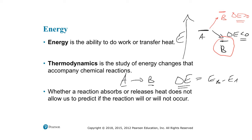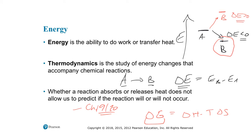Whether a reaction absorbs or releases heat does not allow us to predict necessarily if the reaction will or will not occur. If you want to discuss whether or not the reaction occurs spontaneously, that comes up in Chapter 19 or 20, which discusses the spontaneity of reactions — you might have learned about delta G and its relationship with delta H minus T delta S. If delta G is negative, the reaction can be spontaneous; if it's positive, the reaction won't occur spontaneously. But that's not a discussion for this chapter. The discussion here is: if a reaction occurs, can we determine if that reaction is releasing or absorbing heat, and how much, related to the quantities of reactions taking place?